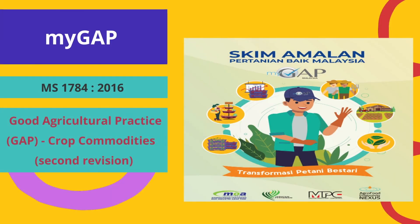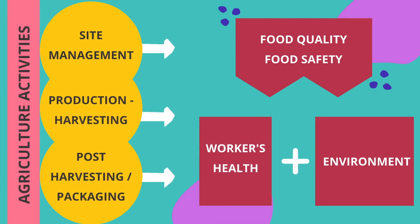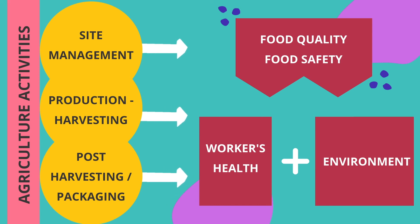An example is MYGAAP — Malaysian Good Agriculture Practice — which is a certification scheme developed according to Malaysian Standard MS 1784:2016 for crop commodities. The stages involved are site management, production to harvesting, and post-harvesting or packaging. Throughout all these stages, MYGAAP represents a holistic approach to life cycle management strategy.